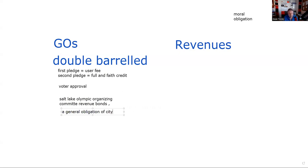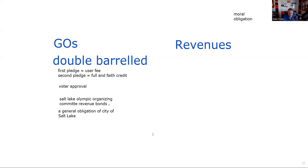On the test, you would tell me that is a GO bond — you put it in the GO category. Some people disagree with me on that, but after decades and helping thousands of people pass their tests, that's where it belongs. If I ask you what kind of bond it is, I could test you: does it require voter approval? It most certainly does. Now let's go to the next one — the moral obligation bond goes over on the revenue side.